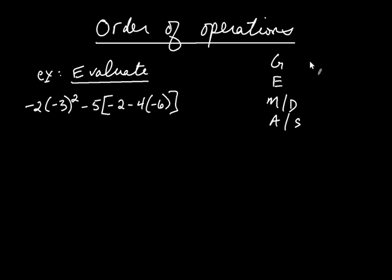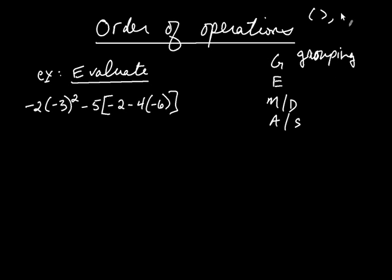G stands for grouping symbols. Grouping symbols can come in lots of different flavors: they could be parentheses, brackets, absolute value, the square root symbol, or the cube root or fourth root, and so on, as we'll see later on.